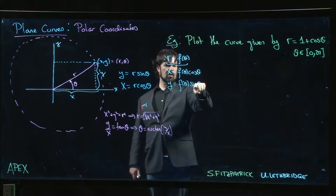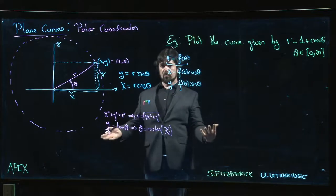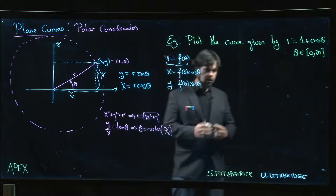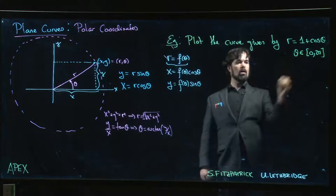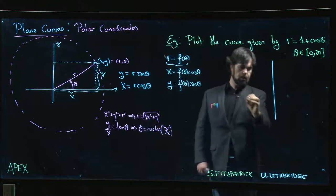We just take the function of theta and we multiply by cos theta and sine theta to get x and y and we use the parametric plotting utility. This is a useful thing to keep in mind. Now on to the plot.